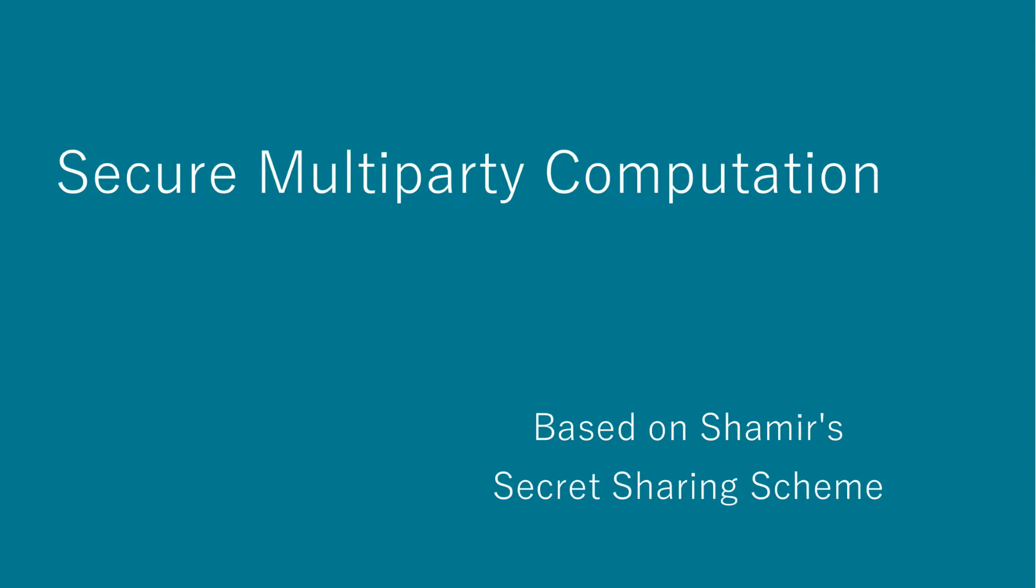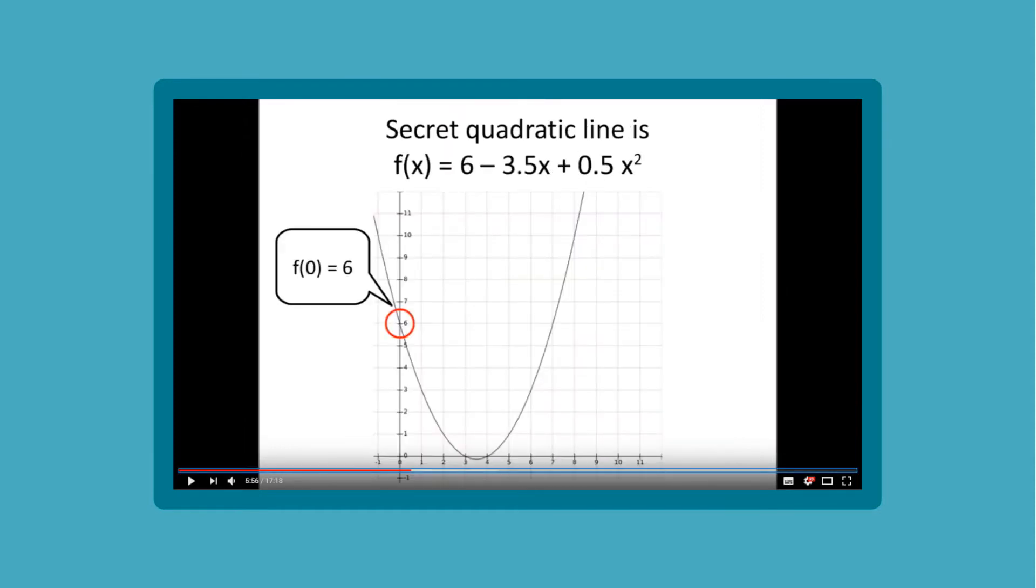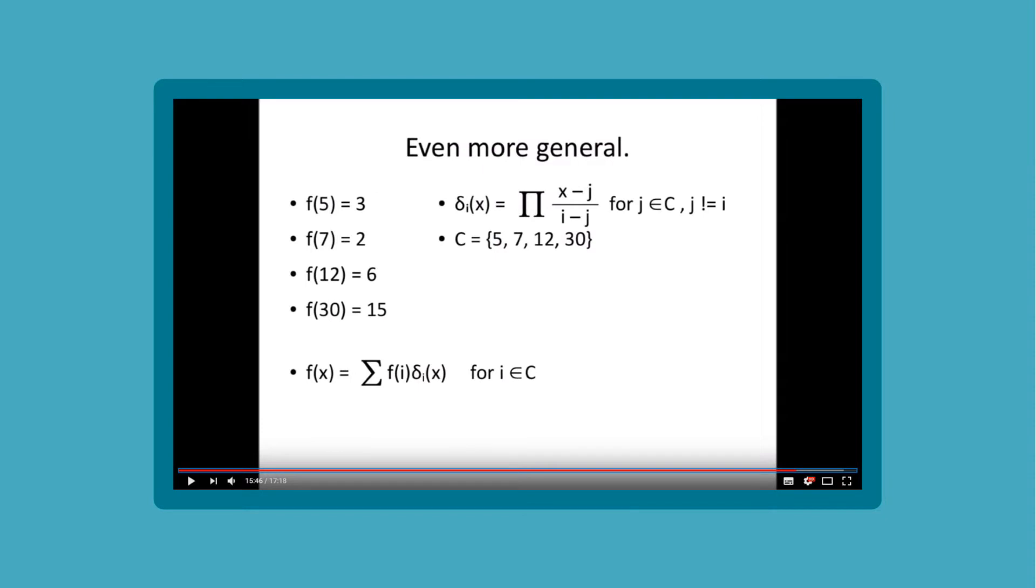Welcome to this introduction to secure multiparty computation. We are going to build on Shamir's secret sharing scheme which we discussed in a previous video, where we saw a gentle introduction to secret sharing by means of polynomials. It also introduced the fairly complicated Lagrange interpolation to reconstruct a polynomial given a number of points on that polynomial.